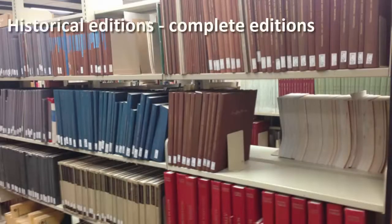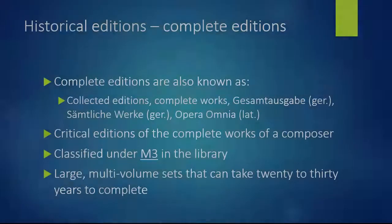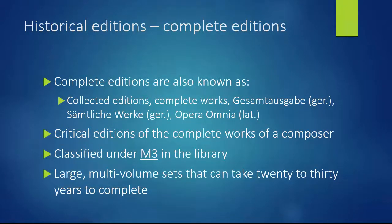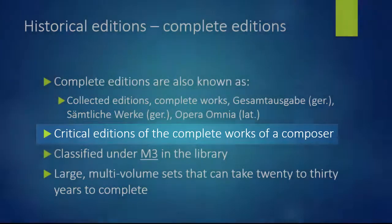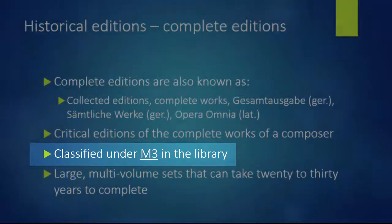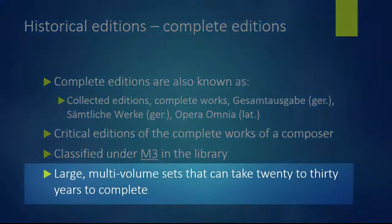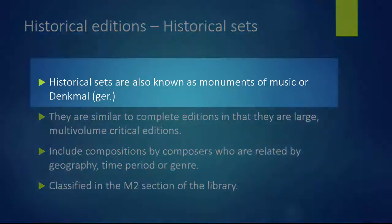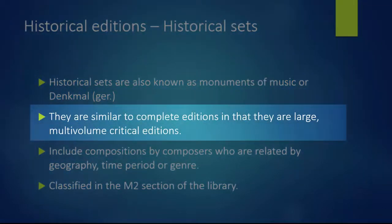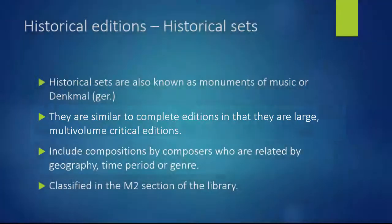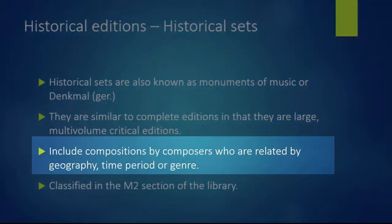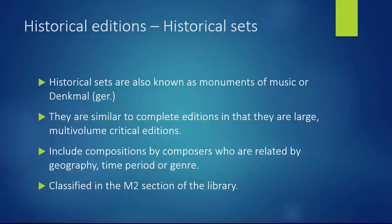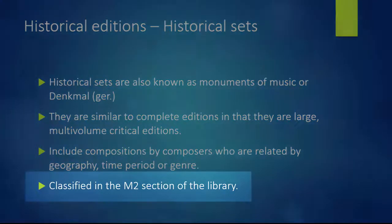Complete editions go by a number of different names in different languages, but are most commonly known as complete works or collected editions. These are a critical edition of the complete works of an individual composer. They are classified under M3 in the library in large multi-volume sets that can take 20 to 30 years to complete. Historical sets are also known as monuments of music. They are similar to complete editions in that they are large multi-volume critical editions, but include compositions by composers related by geography, time period, or genre. All historical sets are classified in the M2 section of the library.